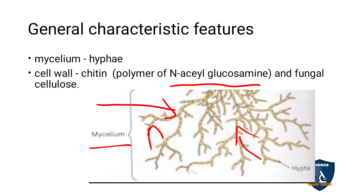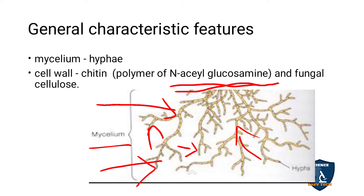General characteristic features of fungi: the body of fungi is called mycelium, which is made up of small thread-like structures called hyphae. The cell wall of fungi is made up of chitin and fungal cellulose. Chitin is a polymer of N-acetylglucosamine — this may be asked in one-mark questions.